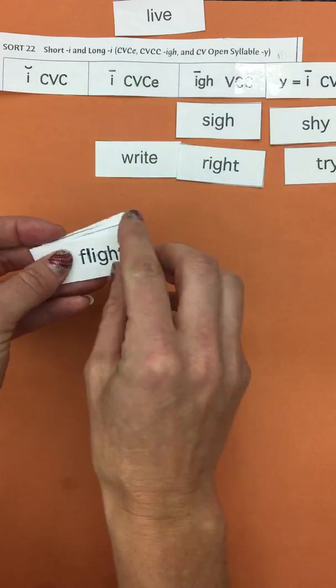Flight, sight, find, quit. It has an I. Fight, fly, cry, bright, sky. Night, night, twice, meaning two times.